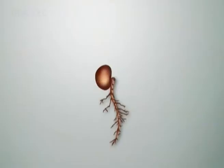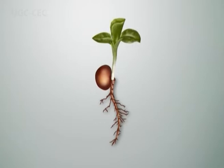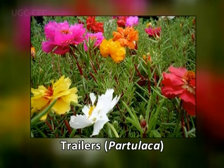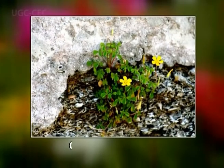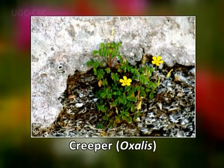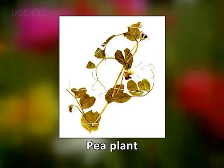The shoot system develops from the plumule of the embryo and comprises the main axis or stem, branches, and leaves. The stem has nodes and internodes; leaves and branches develop from nodes, and the portion between two successive nodes is called an internode. Stems possess diverse modifications. Trailers are plants with weak stems trailing on the ground without rooting at nodes — classified as prostrate, procumbent, or decumbent. Creepers have weak stems that creep on soil surface, producing roots at nodal regions, for example Oxalis. Climbers climb on neighboring objects using special devices, for example tea.